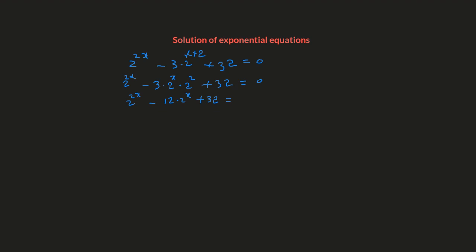The reason we simplified the equation this way — as 2 to the x minus 12 times 2 to the x plus 32 — is because we need to make a substitution. This is the technique to figure out the solution of an exponential equation. The substitution is: let 2 to the x equal y. Substituting, 2 to the 2x becomes y squared, giving us y squared minus 12y plus 32 equals 0.